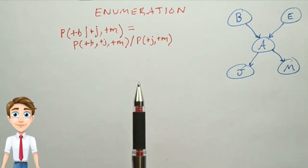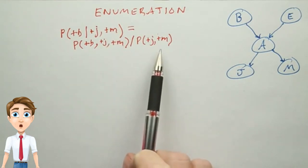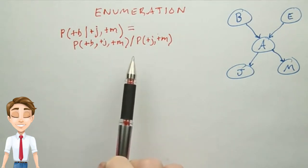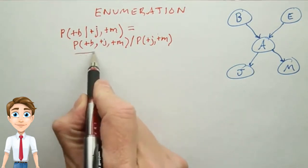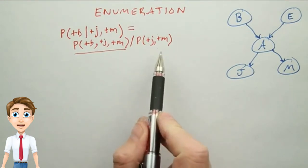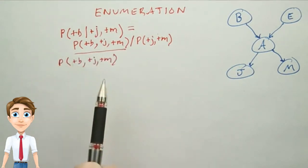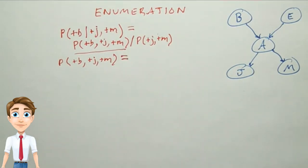To do inference by enumeration, we first take a conditional probability and rewrite it as unconditional probabilities. Now we enumerate all the atomic probabilities and calculate the sum of products. Let's look at just the complex term on the numerator first. The procedure for figuring out the denominator would be similar, and we'll skip that. So the probability of these three terms together can be determined by enumerating all possible values of the hidden variables. In this case, there are two, E and A.